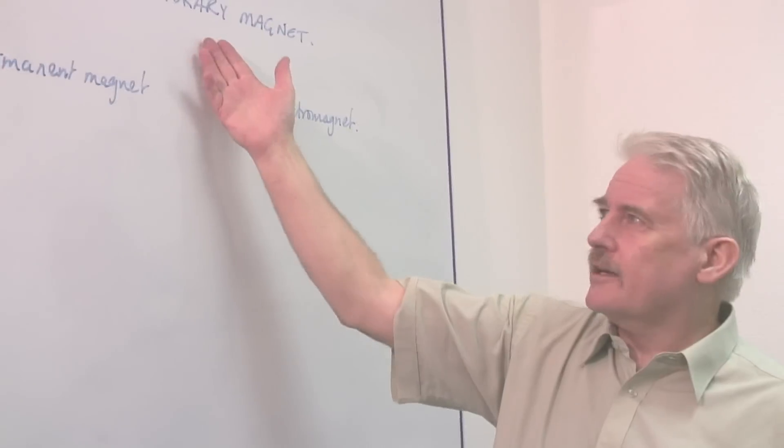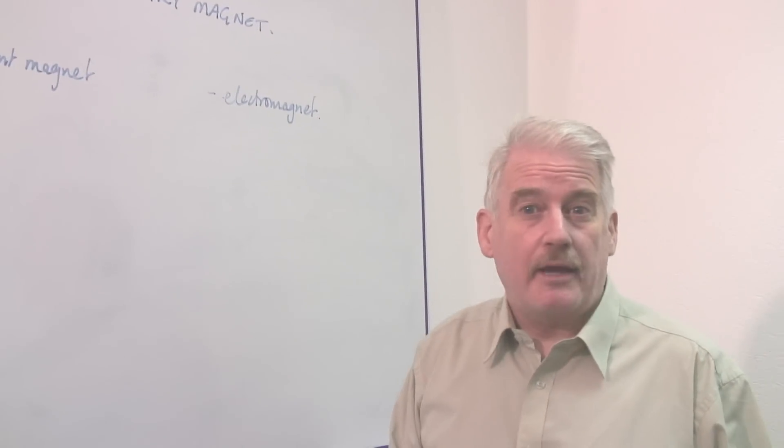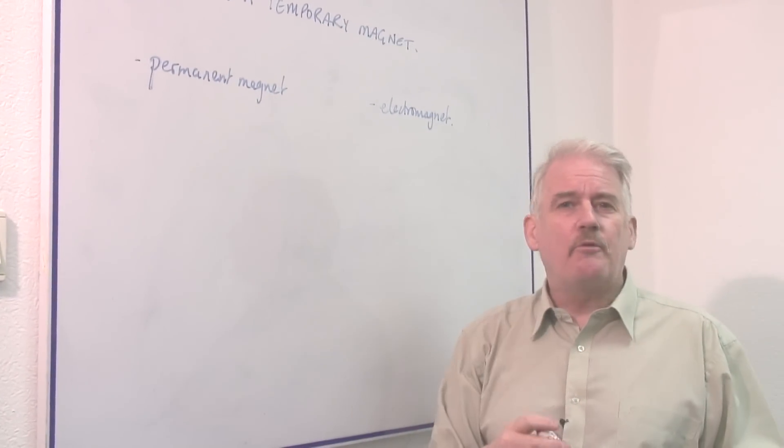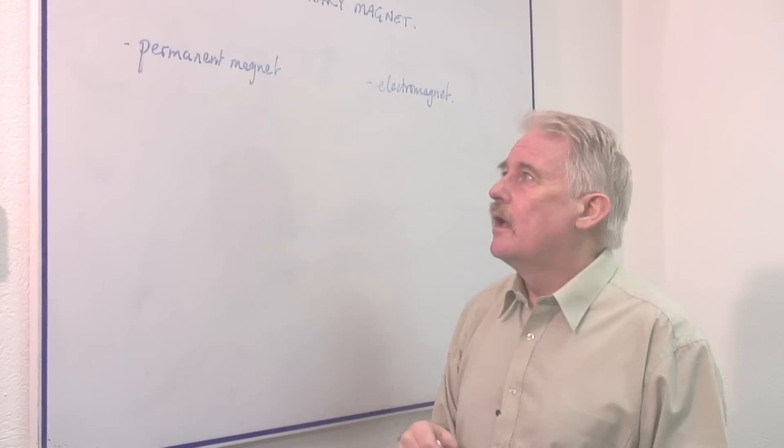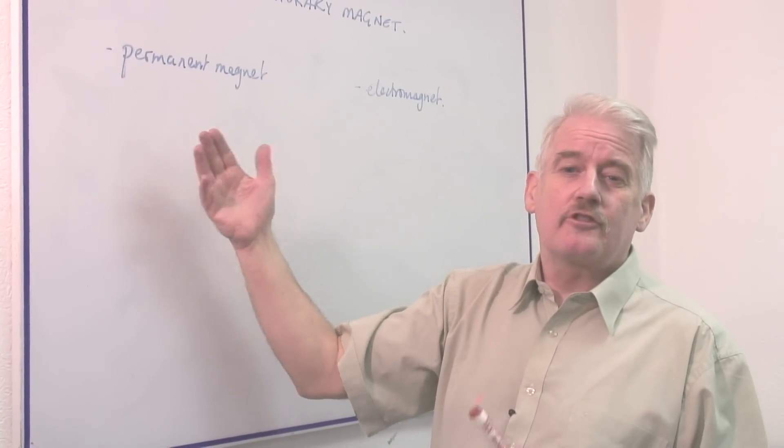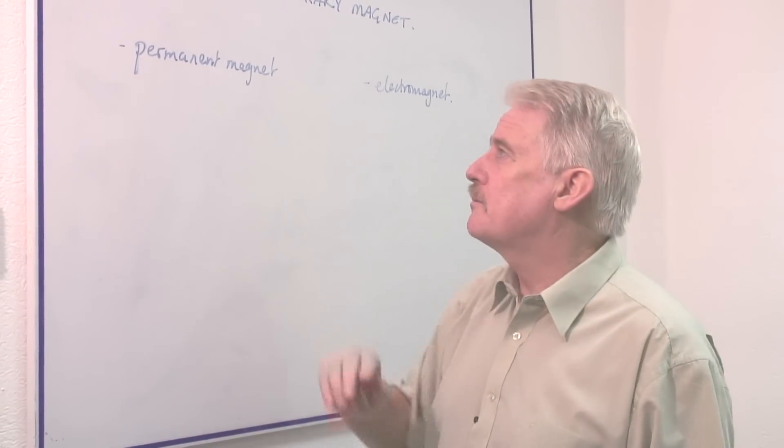So a temporary magnet is really more like an electromagnet. You can't have a permanent magnet which is temporary. It won't be permanent if it's temporary. You can have weaker magnets, or stronger magnets, or magnets that lose their magnetism, but then they wouldn't be called permanent magnets.